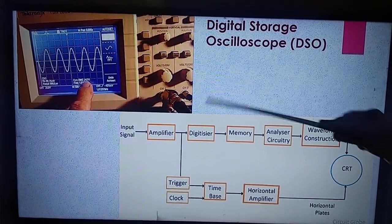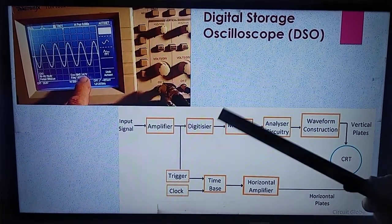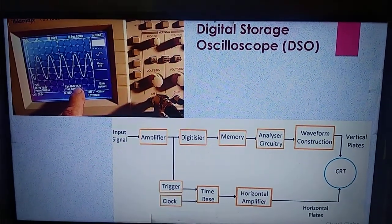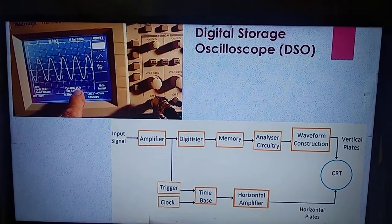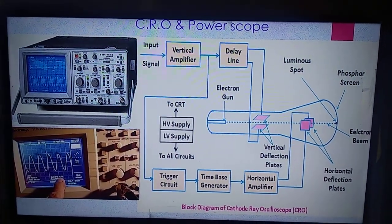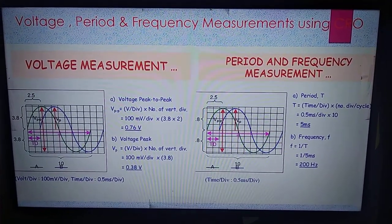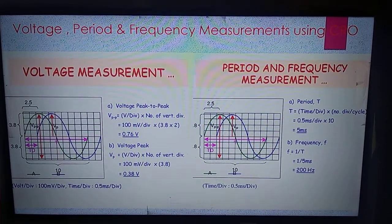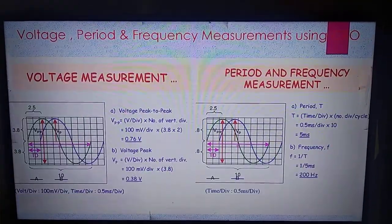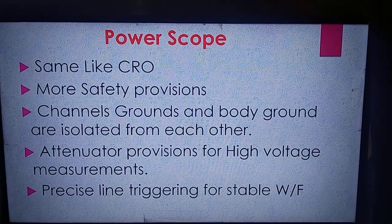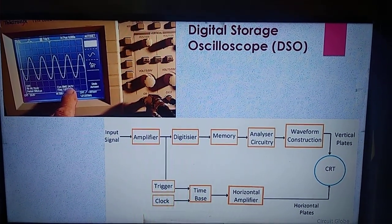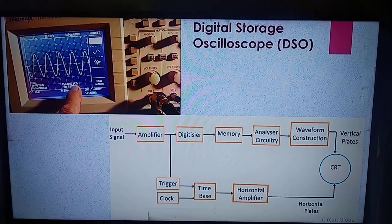The other controls in DSO are the same as a normal scope: volts per division, time per division, and intensity and focus control. Regarding examination questions: you may be asked to explain the normal CRO with a block diagram, explain voltage measurement, period measurement, and frequency measurement using CRO, explain the construction and block diagram of a power scope and its differences from a normal scope, or draw and explain the block diagram of a digital storage oscilloscope and differentiate between normal scope, power scope, and DSO.